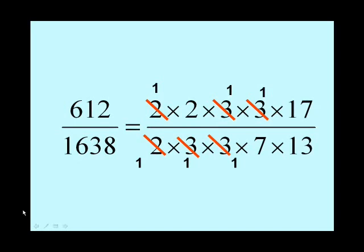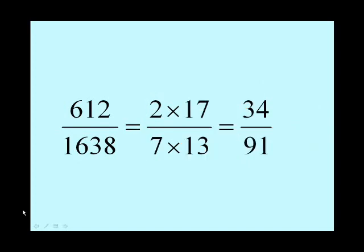So we've got 2 times 17 on the top, and 7 times 13 on the bottom. What we've crossed out is effectively the prime factors of the highest common factor of 612 and 1638. So 2 times 3 times 3 is 18. That is actually the highest common factor of 612 and 1638. So there's the sum you do, and it gives us the same answer as before, 34 over 91.